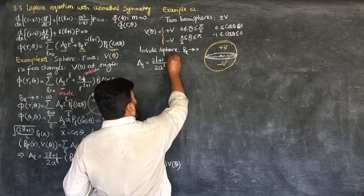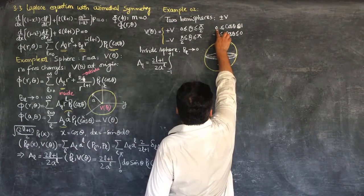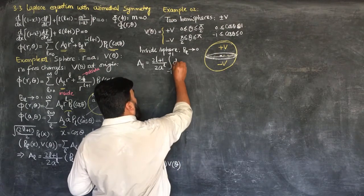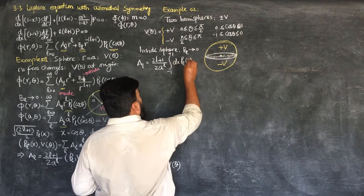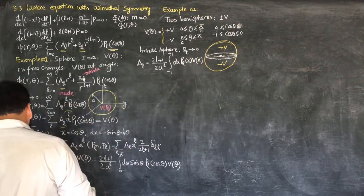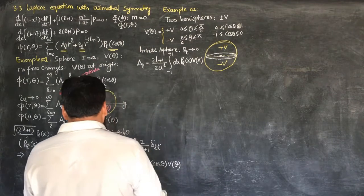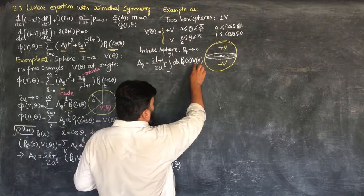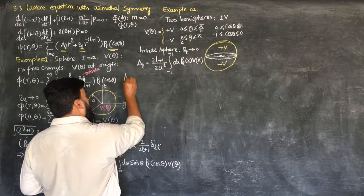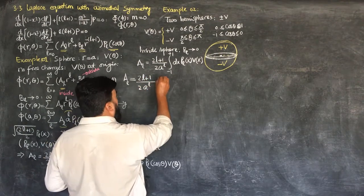And the integration from minus 1 to plus 1, where 0 comes in between, and dx P_L of X. I have written in terms of X and the potential V of X. So we will have to determine the coefficient A_L, because we are inside the sphere, and we are not having a single potential — one is plus V and the other is minus V. So I can write that A_L is equal to (2L+1) over 2A to the power L.